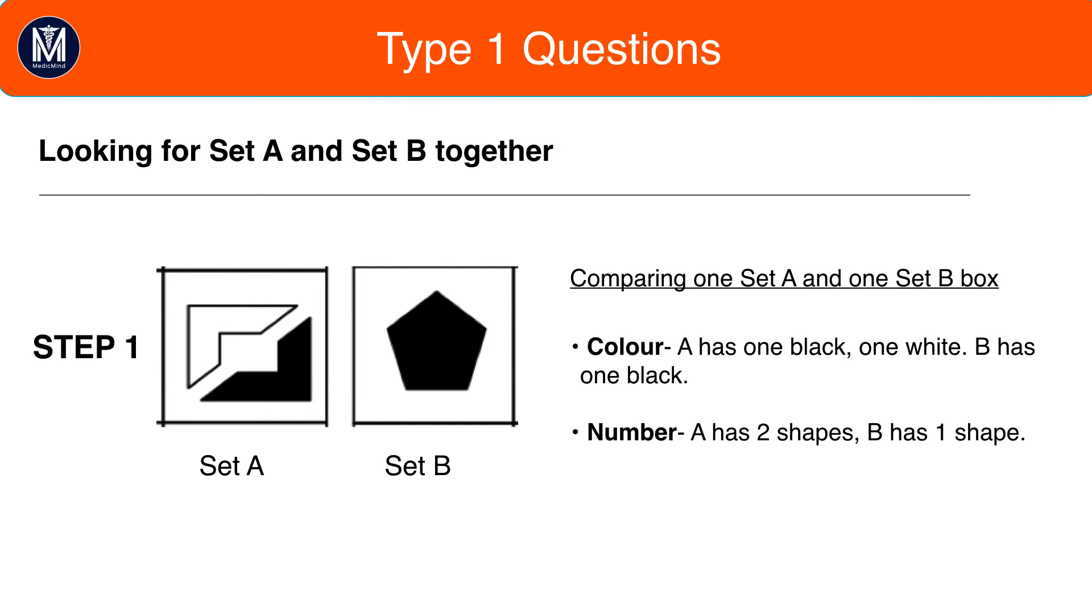Firstly, let's look at color. A has one white and one black. B has one black. This isn't a great pattern because there isn't much of an inverse going on, but this still could be a possibility. Number. A has two shapes. B has one shape.